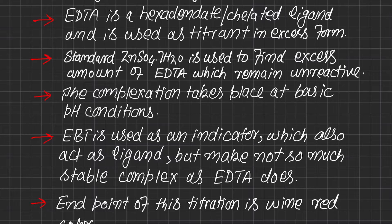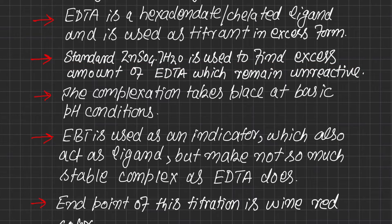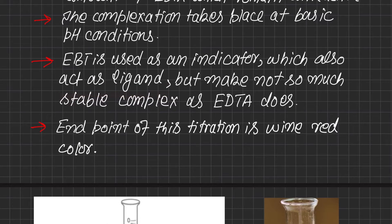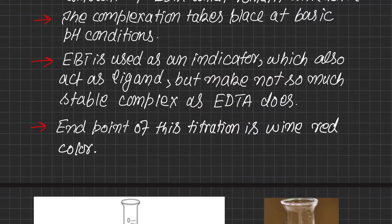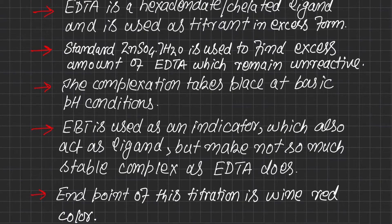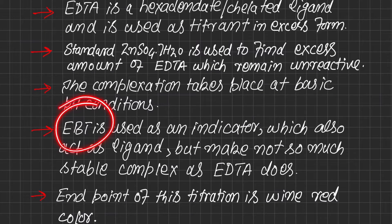Another standard solution, zinc sulfate·7H₂O, is used in order to determine the excess form of EDTA. The complexation takes place at basic pH conditions. EBT is used as an indicator and is a weak ligand, so only EDTA will make a stable complex with metal. In the presence of EDTA, the complex between EBT and metal will break and a complex between EDTA and metal will form. The endpoint of this titration is sky blue — the actual color of Eriochrome Black T indicator.